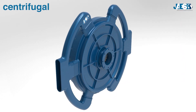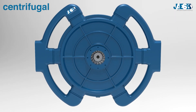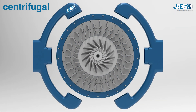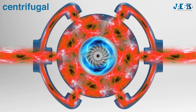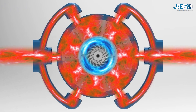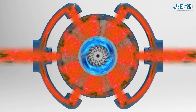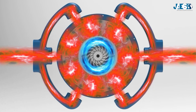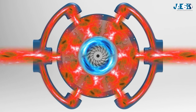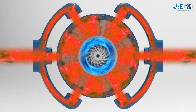Among the dynamic compressors there is the centrifugal compressor. A centrifugal compressor is a turbo machine in which the bladed disc, called an impeller, is set to rotate at a very fast pace, thus generating and supplying energy to the gas which subsequently increases its pressure due to the centrifugal force.